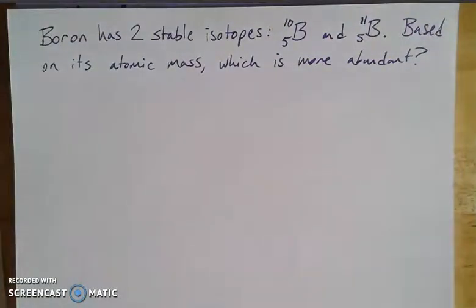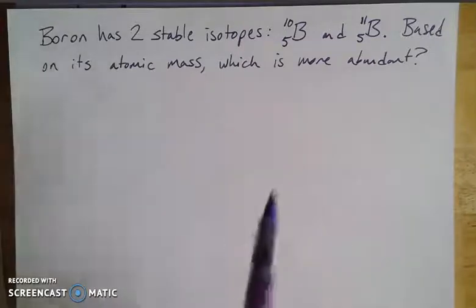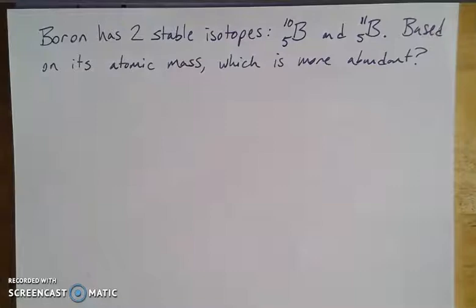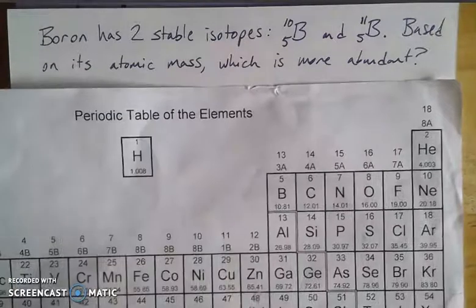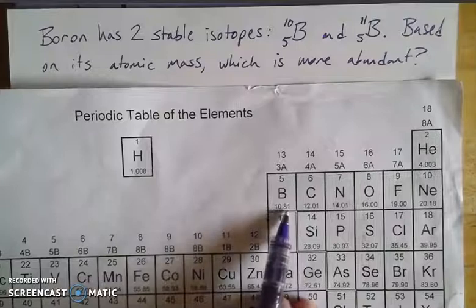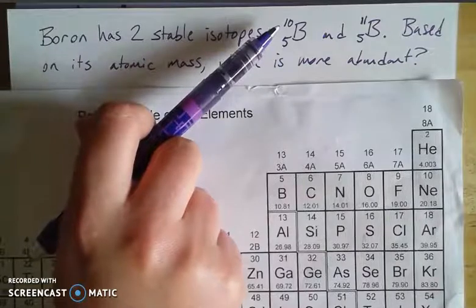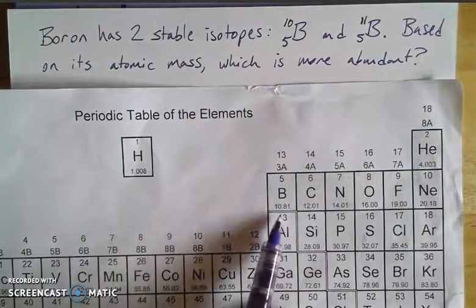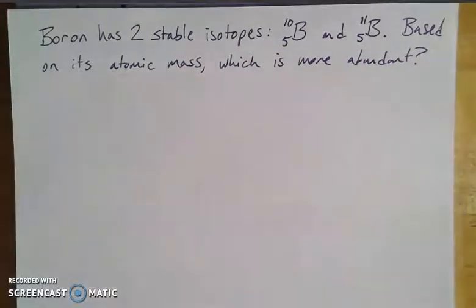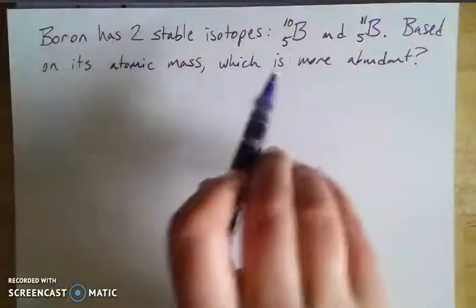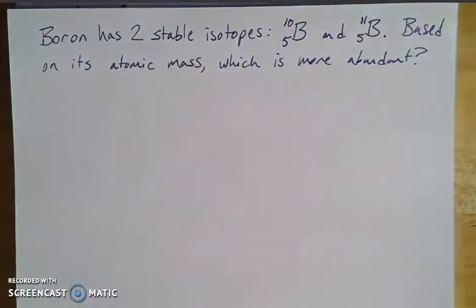Let's look at boron as another example. Boron has two stable isotopes — there are also unstable ones, but we'll focus on the stable ones. Looking at the periodic table, boron is element number 5. Its atomic number is 5 protons, and the reported atomic mass is 10.81. The mass number represents the total number of nucleons, or the mass in atomic mass units.